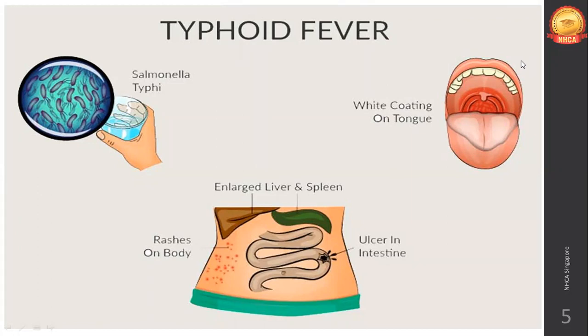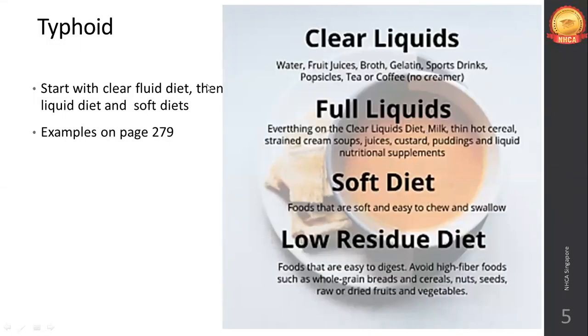In typhoid, the liver and spleen are enlarged — hepatomegaly and splenomegaly. Pressing on the right side under the rib cage (liver area) or the left side (spleen area) causes tenderness and pain. These are classical signs of typhoid. The diet plan for typhoid fever starts with clear liquids, since the intestine is wounded with ulcers and cannot function properly — solid food would add additional pressure on the impaired intestine.